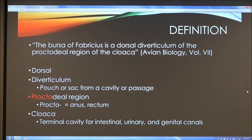By definition, the bursa of Fabricius is a dorsal diverticulum of the proctodial region of the cloaca. Let's break that definition down by looking at the prefixes and suffixes. First, dorsal refers to the upper side or back side of an animal, such as the back fin on a dolphin, known as the dorsal fin.